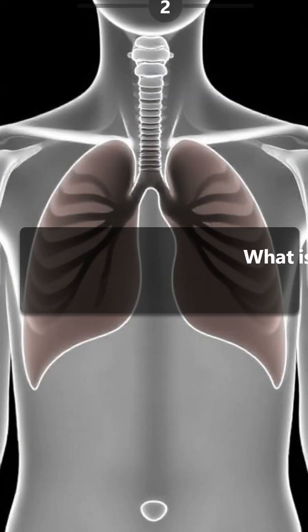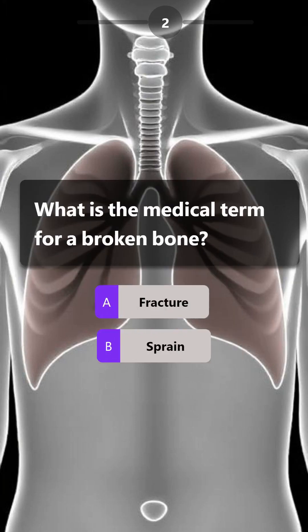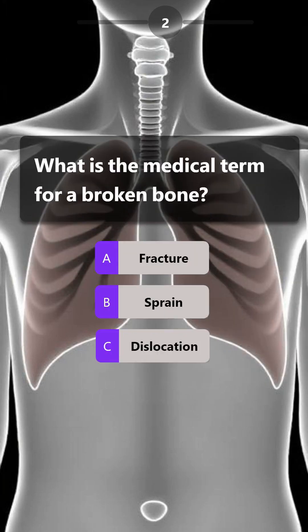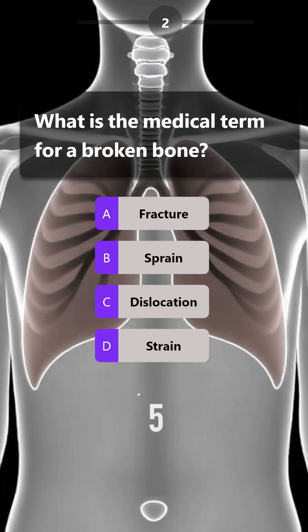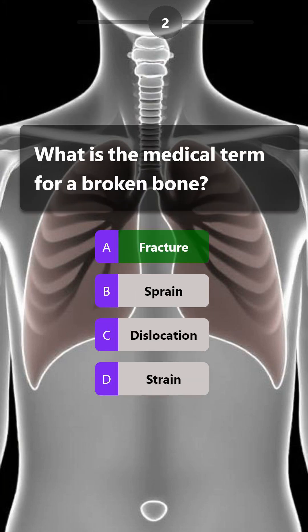What is the medical term for a broken bone? Fracture, sprain, dislocation, strain. Answer is: fracture.